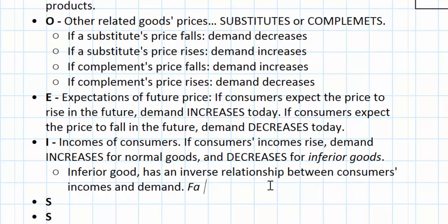Sometimes fast food is considered an inferior good — not because of the quality of the food itself, but because there's evidence that when people's incomes are falling, they tend to consume more fast food and fewer restaurant meals. Other examples of inferior goods include off-brand toiletries. If your income is falling, you still need toothpaste, but you might buy the off-brand version instead of the most expensive brand-name product. There are plenty of goods that consumers buy more of when their incomes fall and less of when incomes rise.